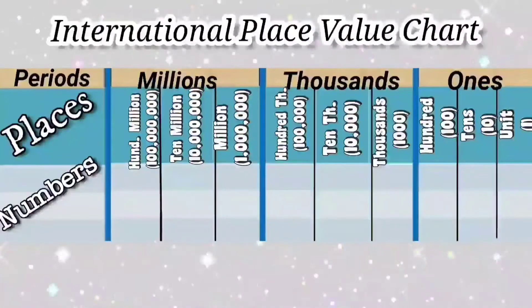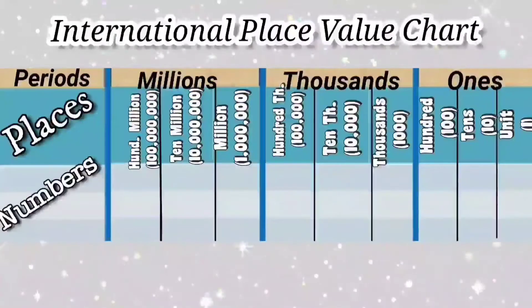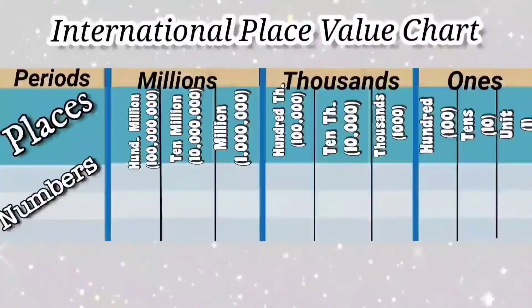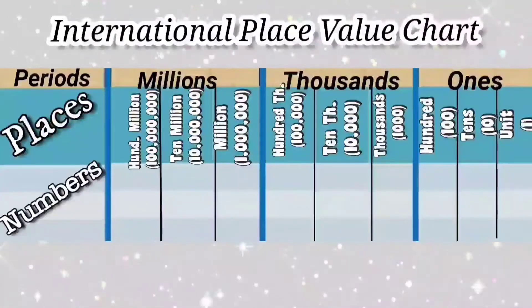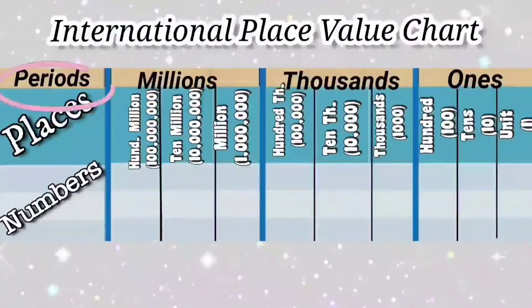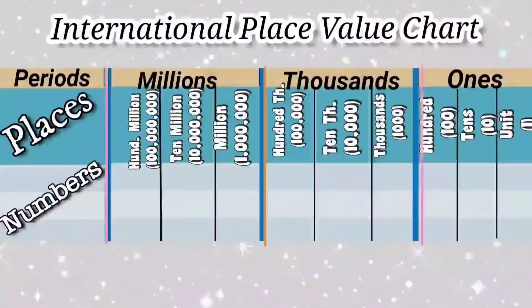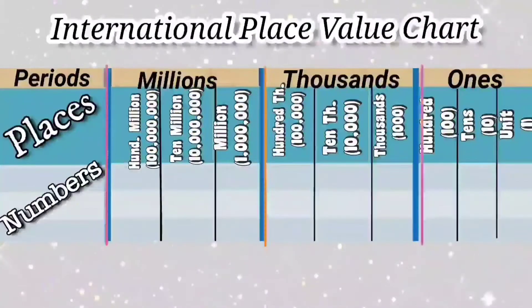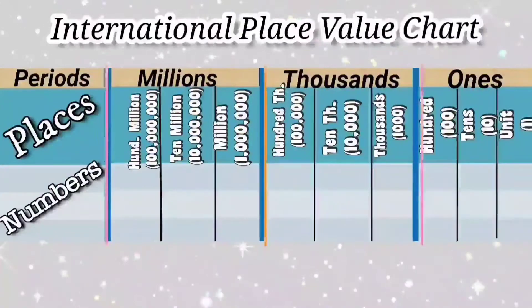In the International system, we group the numbers from right in groups of three called a period, and we put a comma or separator after each period to make the numbers easily readable.